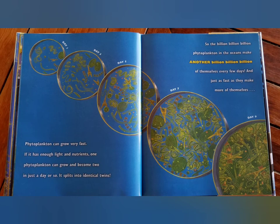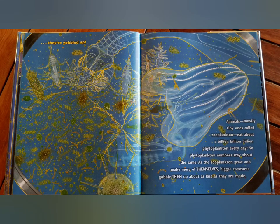Phytoplankton can grow very fast. If it has enough light and nutrients, one phytoplankton can grow and, in just a day or so, it splits into identical twins. Day 1, day 3, day 5, day 7, day 9. So the billion billion billion phytoplankton in the ocean can make another billion billion billion of themselves every few days. And just as fast as they make more of themselves, they're gobbled up.